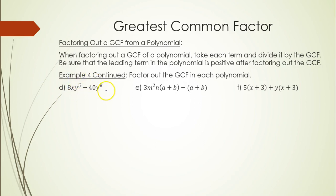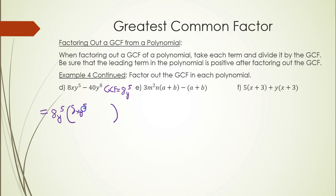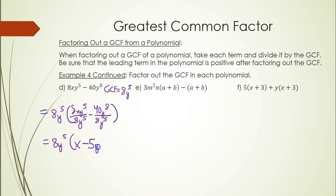In part d, we look for the GCF of 8xy⁵ and 40y⁸. The highest number both 8 and 40 are divisible by is 8. There's no x in both terms, but y is in both terms — the smaller power is y⁵ — so the GCF is 8y⁵. We write 8y⁵ out front: 8xy⁵ ÷ 8y⁵ = x, and 40y⁸ ÷ 8y⁵ = 5y³. The final answer is 8y⁵(x − 5y³).